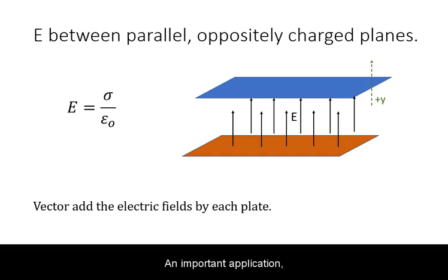An important application of the above derivation is the electric field between parallel, oppositely charged planes. When the charge densities are uniform and equal to each other, the electric field between the planes will be uniform, constant, and double the value from either of the planes.